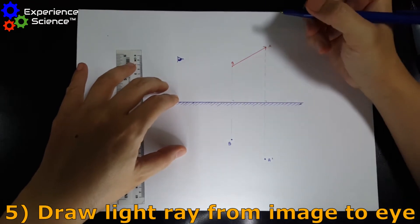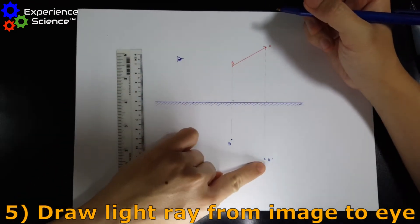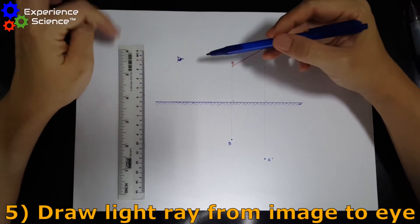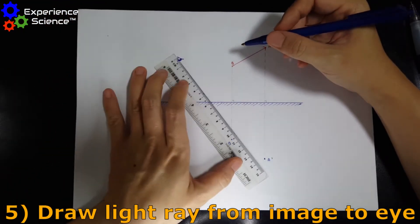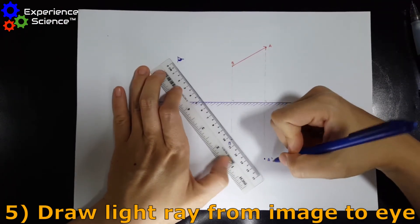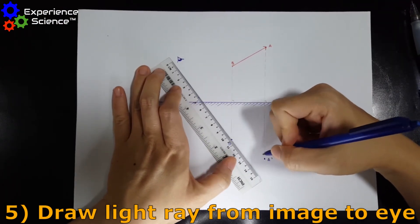...we are going to draw the light rays from the image to the eyes. And since the eyeball has two corners, we will draw two light rays to show how the light travels to the two extremes of the eyeballs. So let's do for A' first.